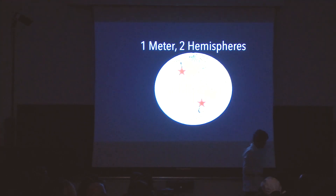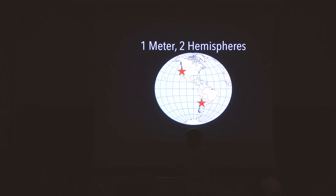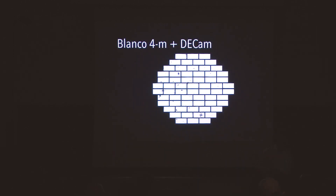It was an incredible coincidence that the universe conspired from an event billions of years in the making to arrive three days after the Italian detector was turned on. We were part of a team called the One-Meter Two Hemispheres — not a very inventive name. We had a one-meter telescope at Lick Observatory right here, and a one-meter telescope in Chile called the Swope Telescope, because we didn't know if the event would come from the north or south. The object actually came from the south.